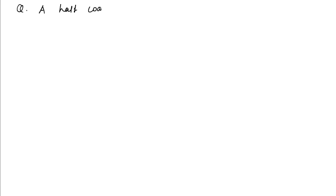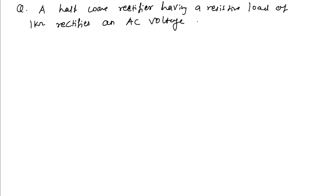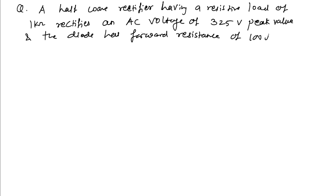A half wave rectifier having a resistive load of 1 kilo ohm rectifies an AC voltage of 325 volt peak, peak value, and the diode has forward resistance of 100 ohms.